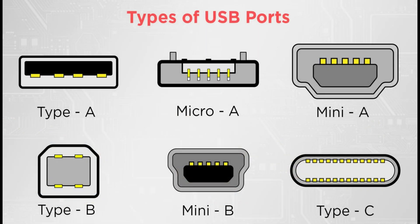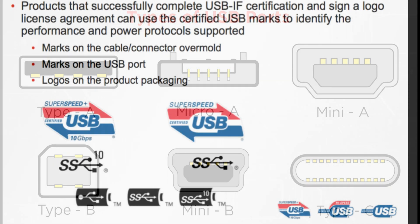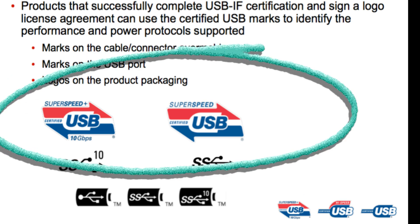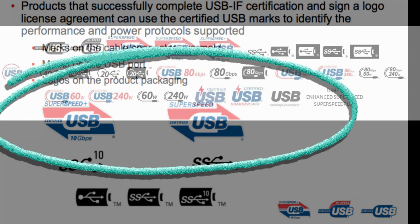Here are the USB port differences. Here is Type A, Micro A, Mini A, Type B, Mini B, and Type C. On most USBs you have seen this kind of logo — that is the USB-IF logo. What is it? Why is it required? Let us discuss.